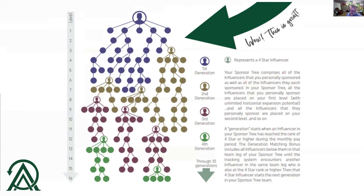What this means is the matching can be unlimited people. The three-by structure has roughly 88,000 positions, but this is unlimited. Every single person that you refer is on your first level. If I sponsor 39 people in the three-by structure, that fills my first three levels — but in the generation matching, all 39 are on my first level, and I can go unlimited. They can all go unlimited. I'm going to make a 5% match on anything they earn in their three-by structure, to infinity, as soon as I become a four-star influencer.